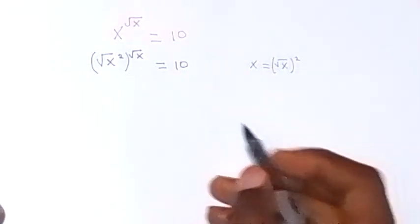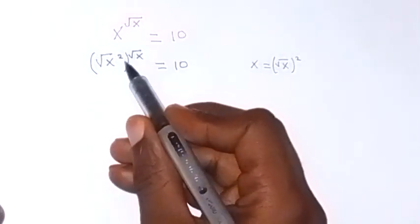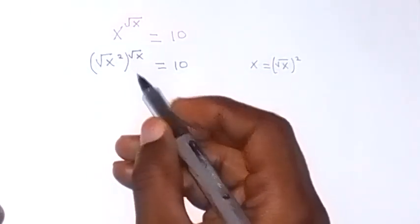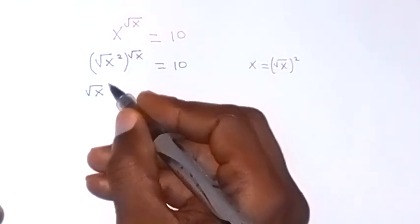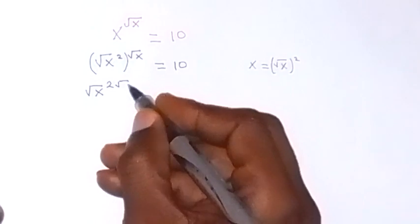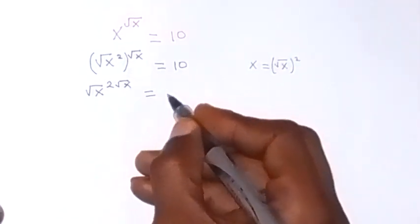And applying the law of indices, this power multiplies each other. And we can write this as root x, then raise to power 2 root x, which gives us 10 equals to 10.